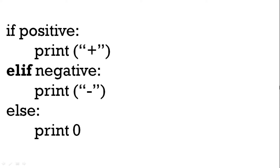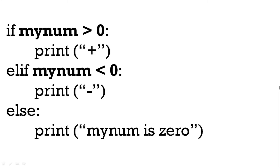For choice we can use if-else with elif in between. So here: if positive, print plus; elif negative, print minus; else print zero. Instead of having just if and else, we can have another if statement in between using elif. We can change that: if my number is greater than zero print plus, elif my number is less than zero print minus, else print 'my number is zero'.